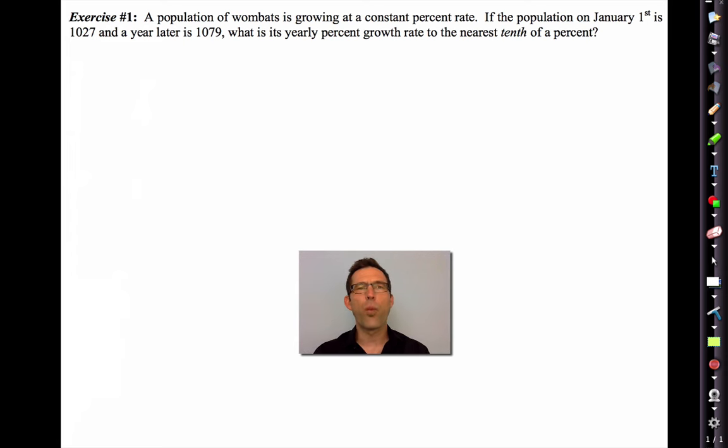A population of wombats (yes, a wombat is a real thing, Google it) is growing at a constant percent rate. If the population on January 1st is 1027 and a year later 1079, what is its yearly percent growth rate to the nearest tenth of a percent? Well, I'd like you to work on this a little bit. This is the most basic percent question probably that you can get.